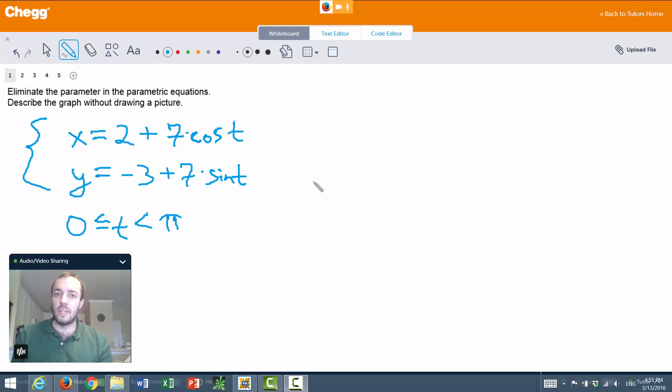I mostly do math and computer science, and in this video I would like to do an example involving parametric equations. So here we want to eliminate the parameter in the parametric equations, and then we want to describe the graph without actually drawing a picture of the graph.